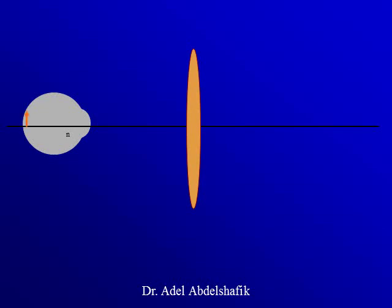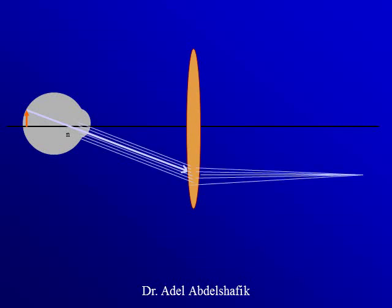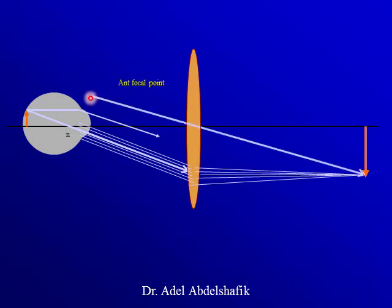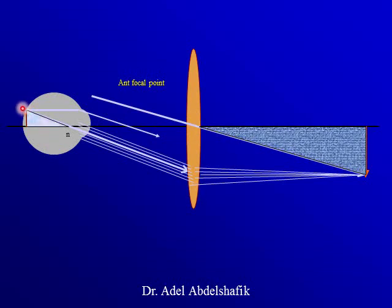Rays from this part of the retina come out parallel, and this plus lens focuses them at its focal point, forming an image. Taking a ray parallel to the others passing through the anterior focal point of the patient, and another parallel ray passing through the principal nodal point of the lens — all these rays are parallel. So we have two triangles: one representing the object (the part of the retina examined) and one representing the image.